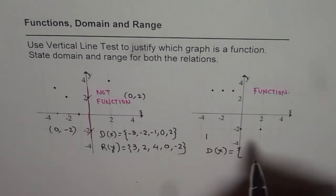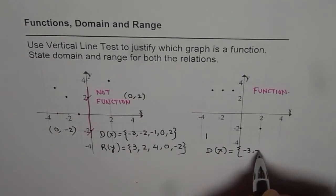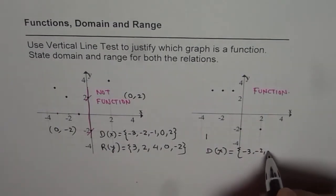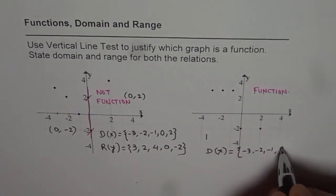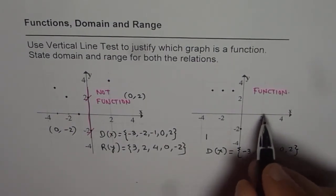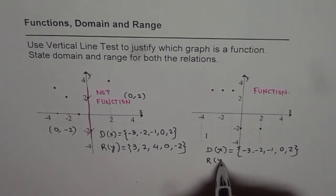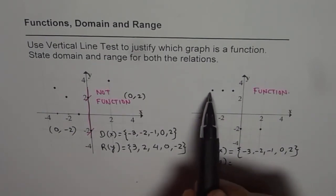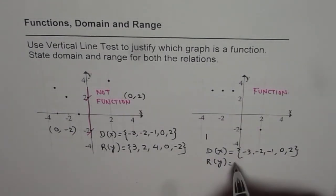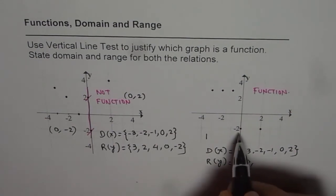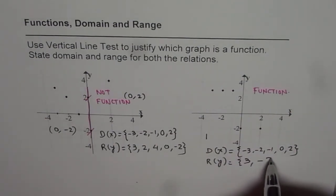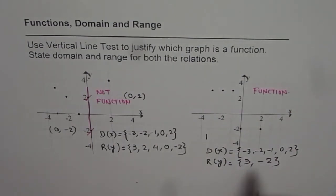Starting from the leftmost, we have minus three, then minus two, minus one, zero, and two. So D(x) = {-3, -2, -1, 0, 2}. As far as range is concerned, range is the y values. So the y value here is three, and here the y value is minus two. So R(y) = {3, -2}.